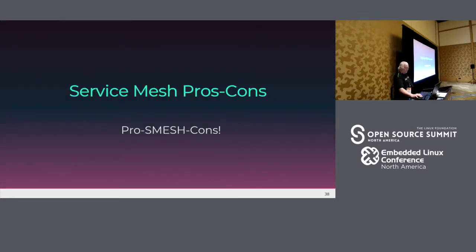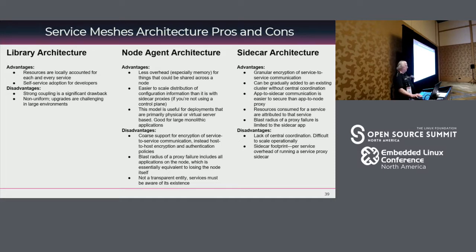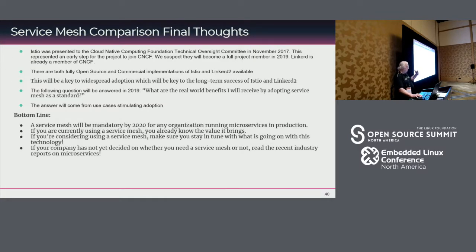For pros and cons: using a library architecture you get hit with particular advantages and disadvantages. From a node agent standpoint, there's an equal amount of advantages and disadvantages. From the sidecar architecture, there are far more advantages than disadvantages. I've put these slides out on the Internet already — they're sitting underneath the profile for this talk.